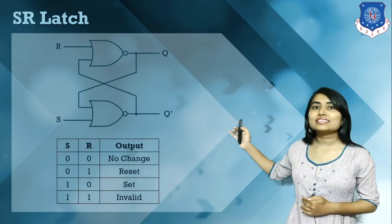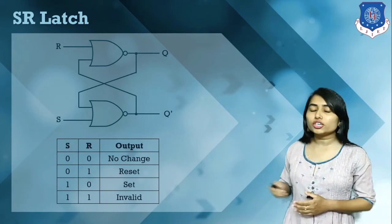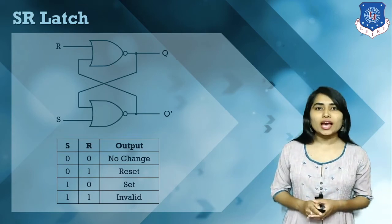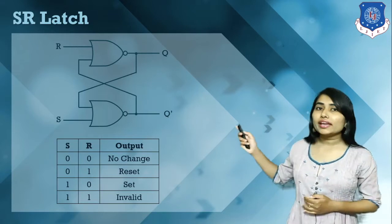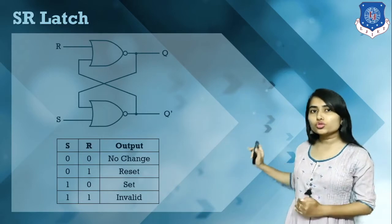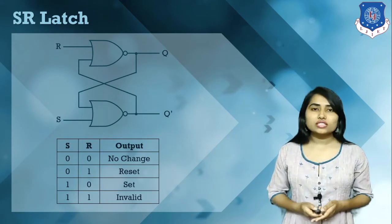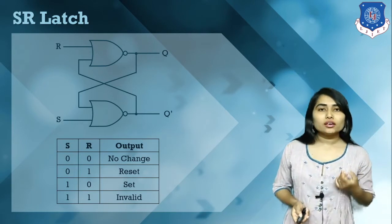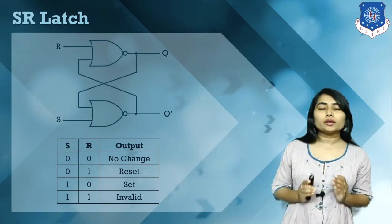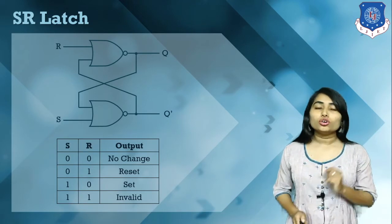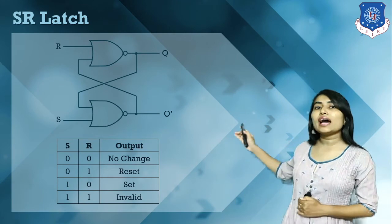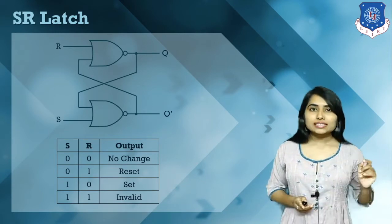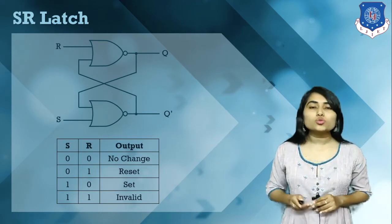Whenever S and R are both equal to 0, the output is no change — meaning whatever the previous output was is forwarded to the next output, so Qn+1 equals Qn. When S is equal to 0 and R is equal to 1, we have a reset condition — meaning we have an output of 0. Since this is an active high circuit, whenever R equals 1, it produces a reset.